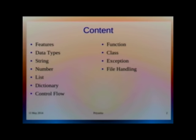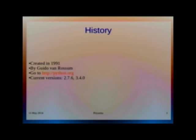These are the contents. These are only basic contents I am going to cover. A little bit of history there. Python was created in 1991, a very old language by Guido Van Rossum from the Netherlands. python.org is the official website of Python. There you will get every kind of documentation, tutorials. We are using current versions 2.7.6 and 3.4.0.